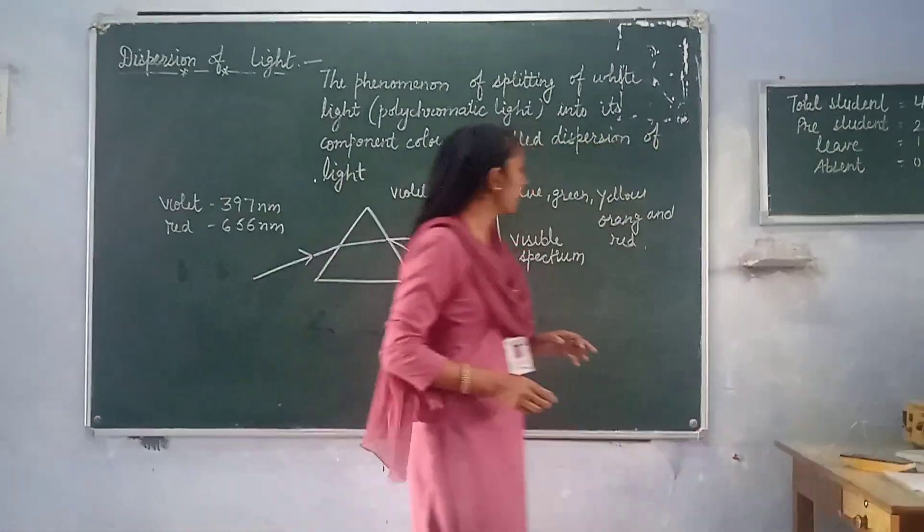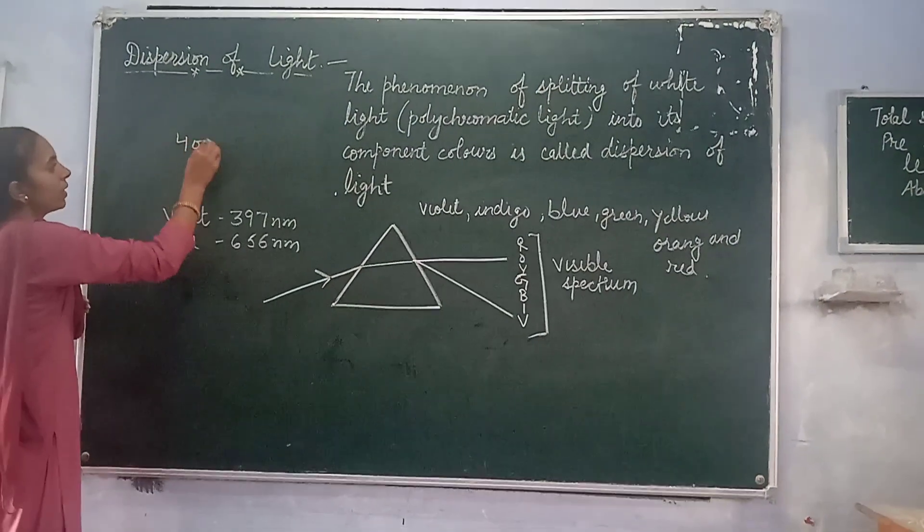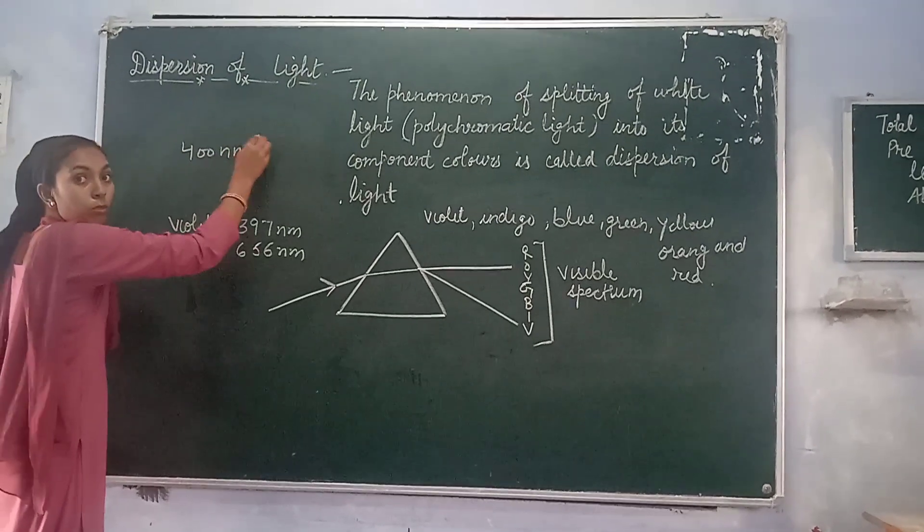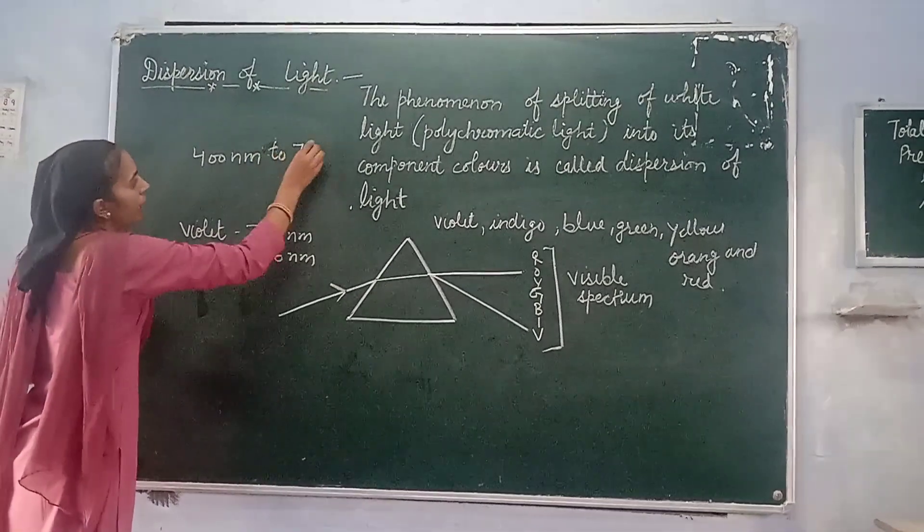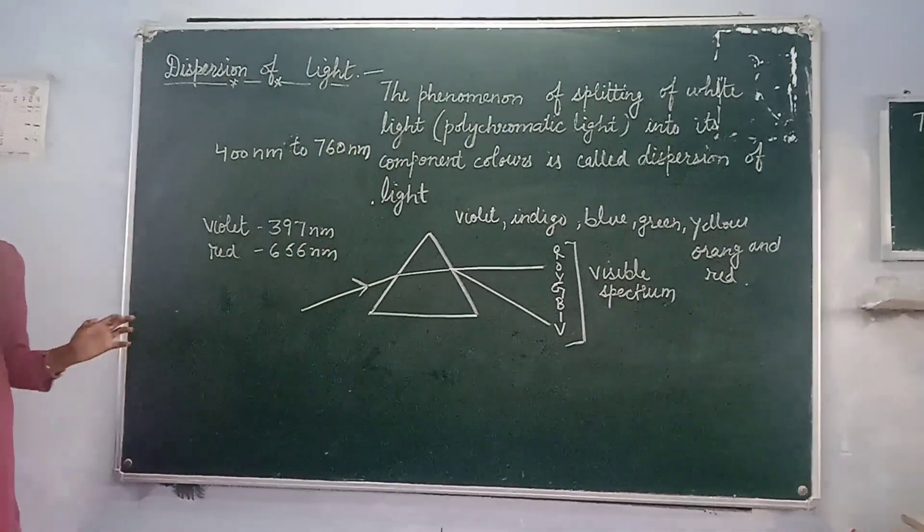White light has a wavelength ranging from 400 nanometer to 760 nanometer. Vacuum is non-dispersive.